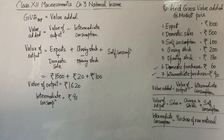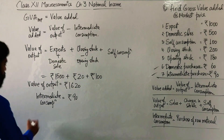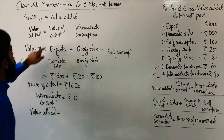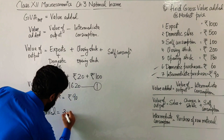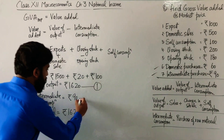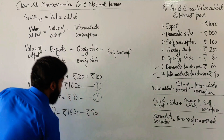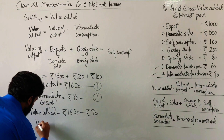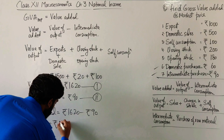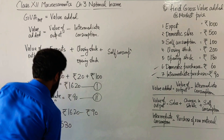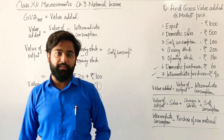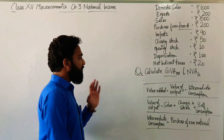Now we can calculate the value added. Value added is equal to value of output which is rupees 1620, minus intermediate consumption which is rupees 90. So GVA MP will be rupees 1530. Is that clear, students?